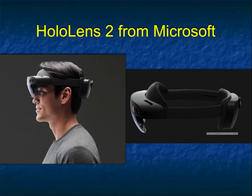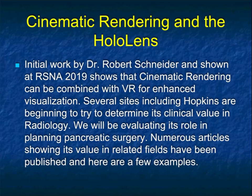One of the things we do now with 3D imaging is we're still looking at things on a monitor, which perhaps limits our ability to truly see things in 3D because it's a flat monitor. One of the things that's come along recently is the HoloLens 2 from Microsoft, that's being used in a number of different fields.